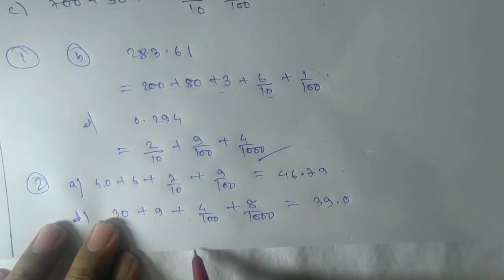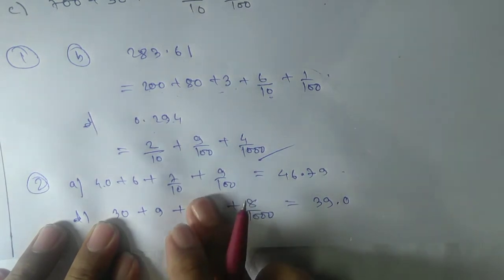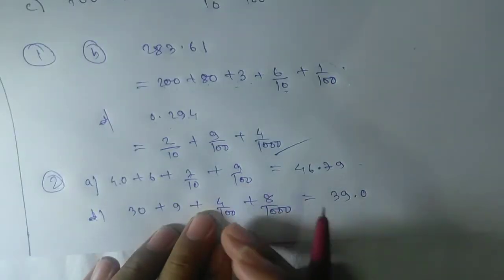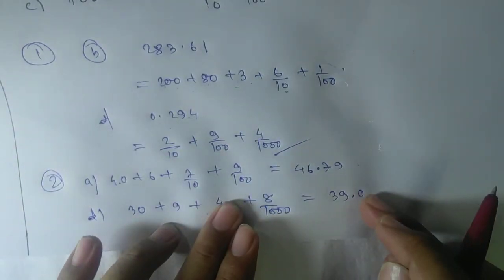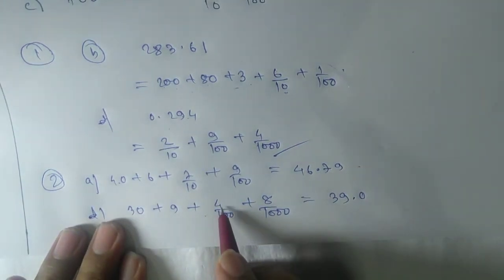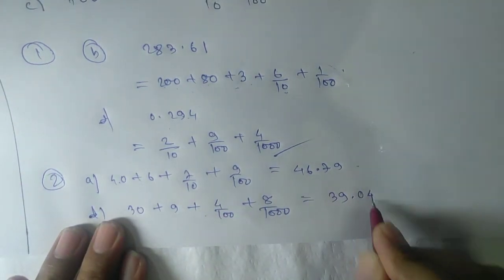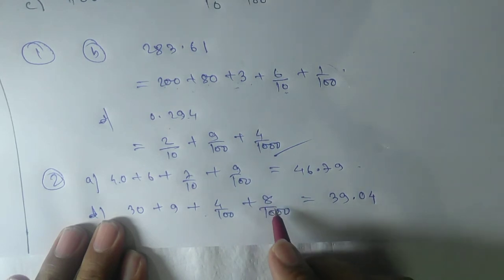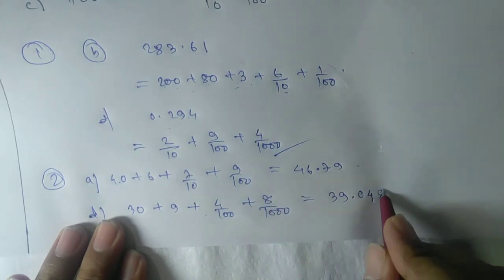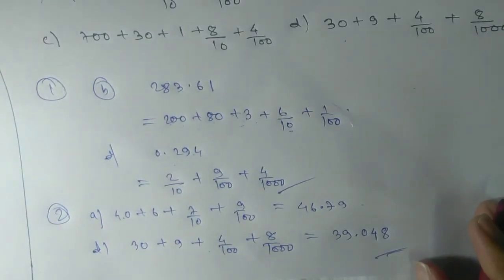See here, we don't have the tenths place digit, that means there should be zero. If you don't have this one also, then we would have another zero. But we have here the hundredths place digit, that is 4, so we'll write here 4. And in the thousandths place digit, what is there? 8. So we'll write 8. This is your answer. Thank you.